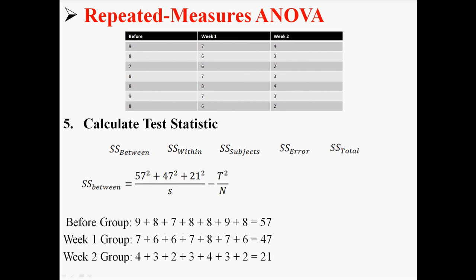What we're going to do is find the sum for each of the groups. The before group, the week one group, and the week two group. So we get 57, 47, and 21. What we're going to do is square each of those values and then add them all together. That's what that top part of the equation means.